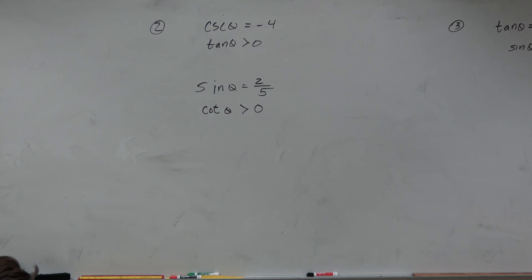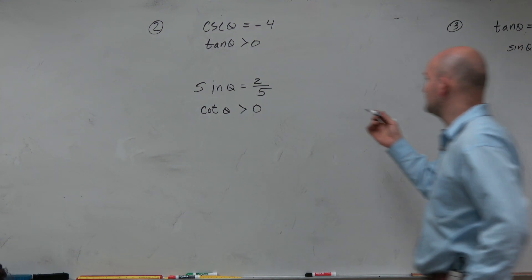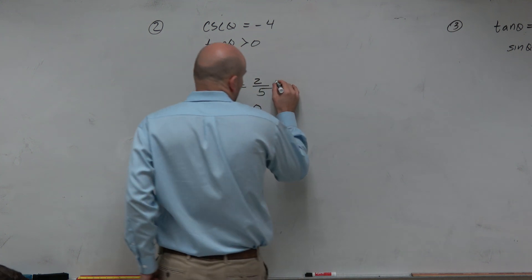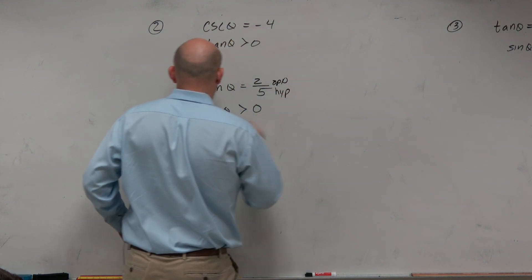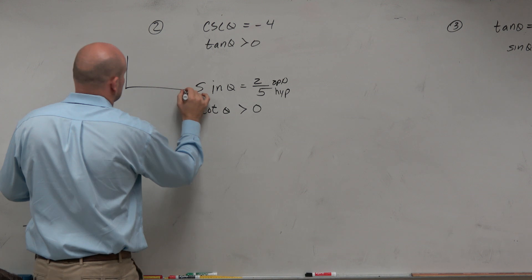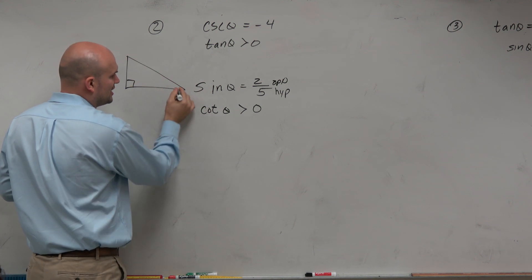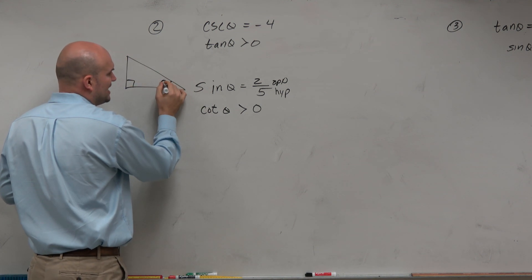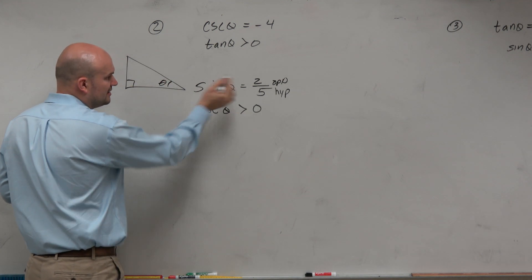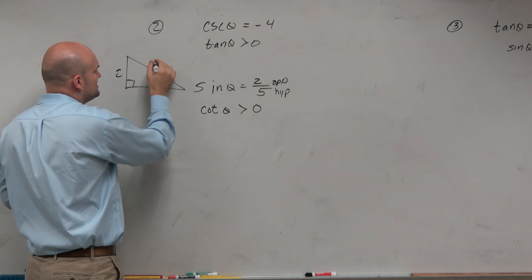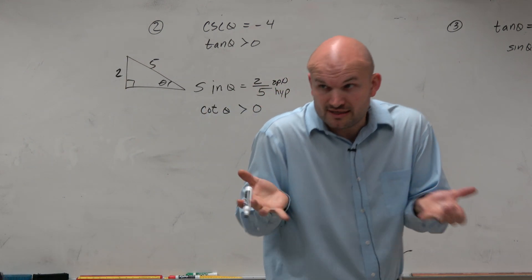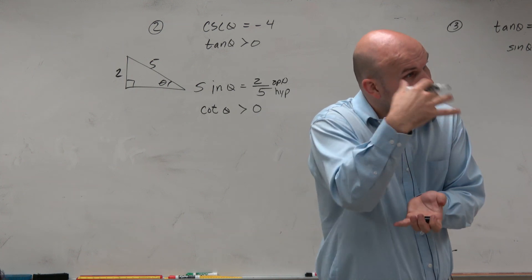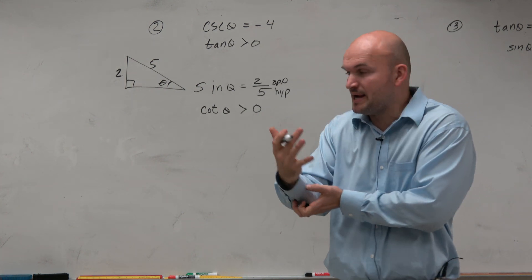All we were thinking about was sine of theta equals 2 over 5 — opposite over hypotenuse. What I told you to do is just draw a right triangle, throw theta in one of the other angles, and then label the opposite side and the hypotenuse. It didn't matter what the triangle looked like, and you could evaluate the six trigonometric functions from there.